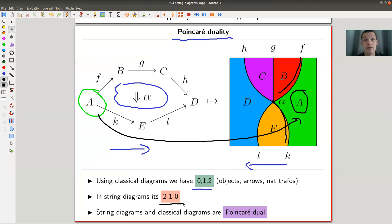categories are faces, functors are lines, and natural transformations are coupons. This is kind of a Poincaré, and not just kind of, it is the Poincaré dual to the classical picture.